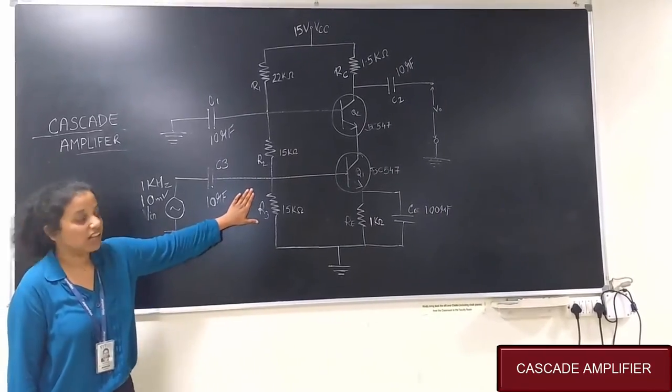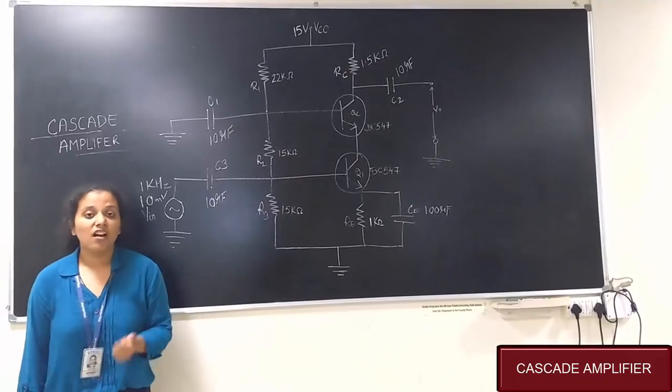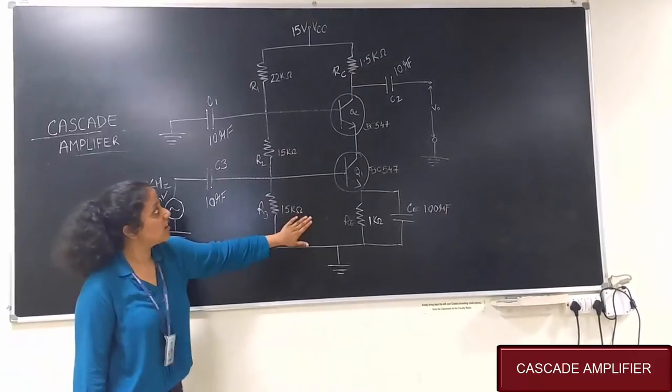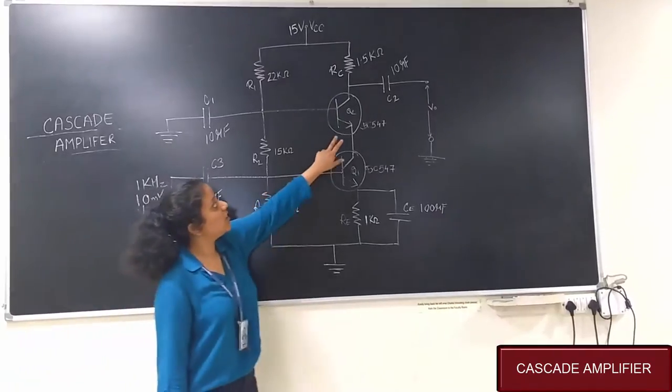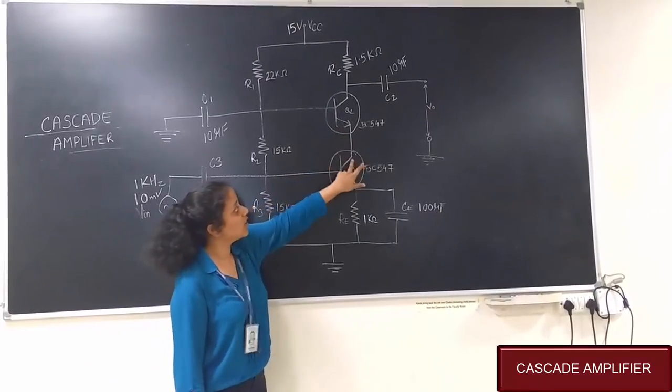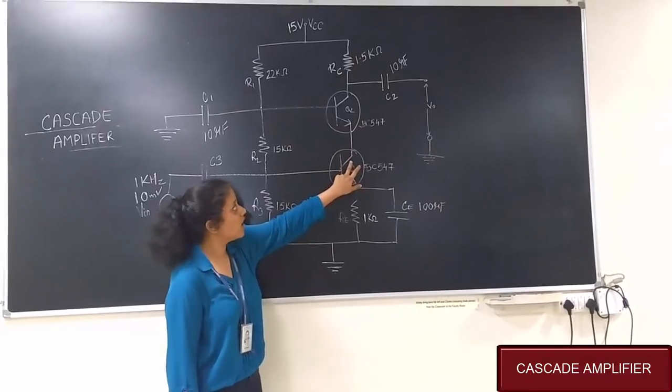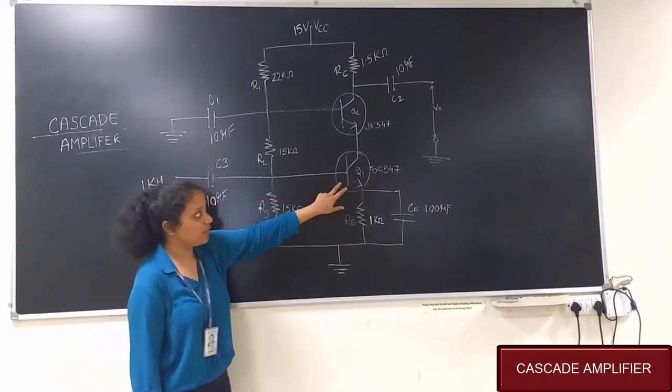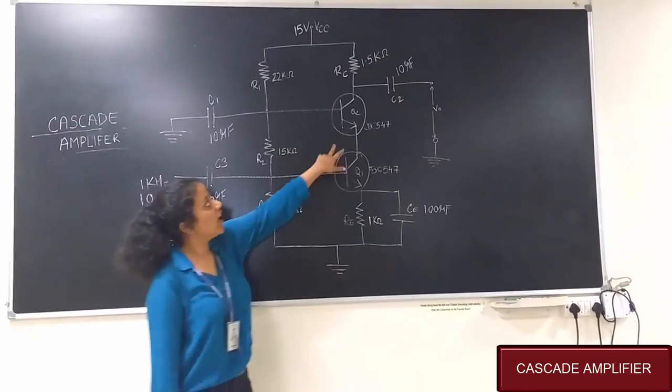This is the circuit of the Cascade Amplifier, which is used for reducing the Miller effect and the loading effect. In this circuit you can see that the emitter of transistor Q2 is connected to the collector of transistor Q1. Input is given at the base of Q1, and output is taken at the collector of Q2.